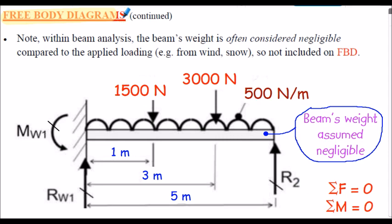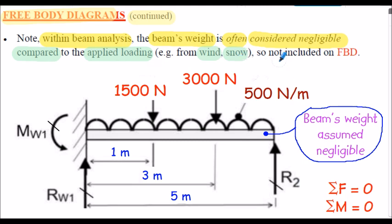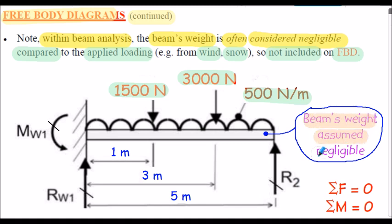Within beam analysis, the beam's weight is often considered negligible compared to the applied loading — for example, from wind loading or snow loading. So often the beam's weight is not included in the free-body diagram. Considering our propped cantilever beam, there could be an applied load from the beam's weight, but very often it's assumed negligible as it's a very small proportion of the applied loading.